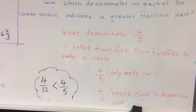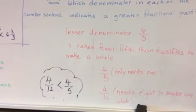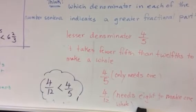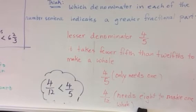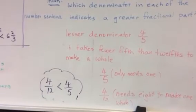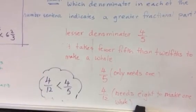four twelfths is bigger or four fifths is bigger. And four fifths, you need only one more part to make a whole. Because 5 minus 4 is 1. But 12 minus 4 is 8. So, you need eight parts. So, the four fifths is bigger.